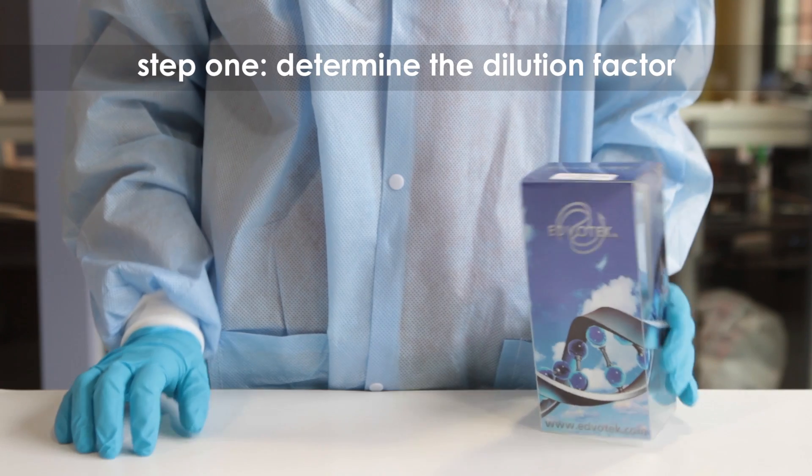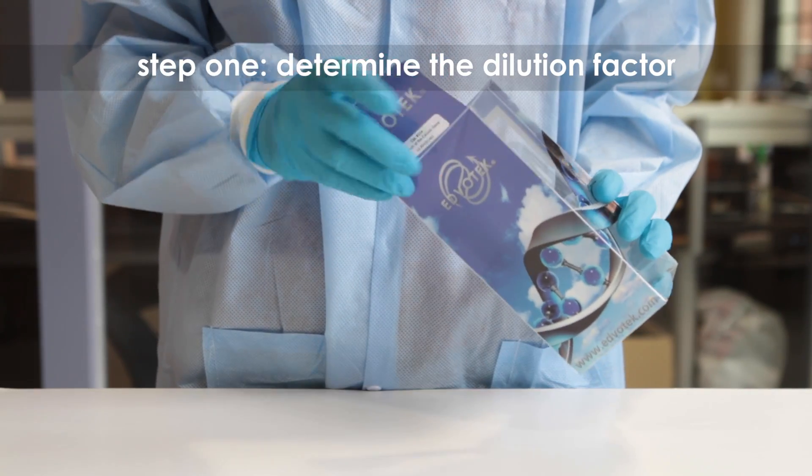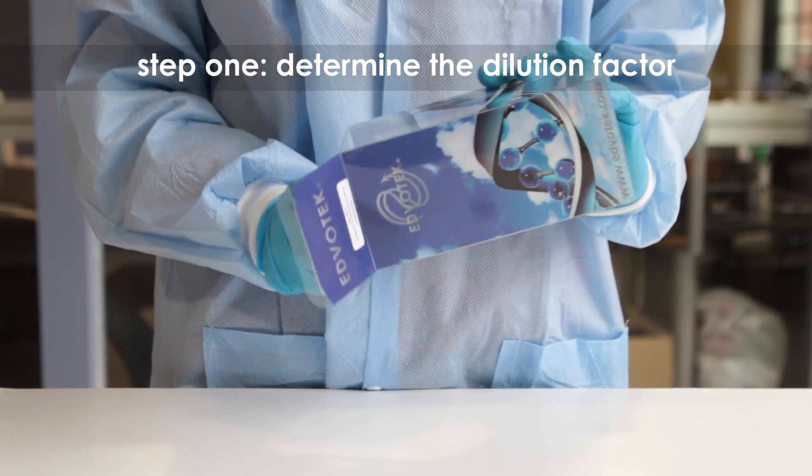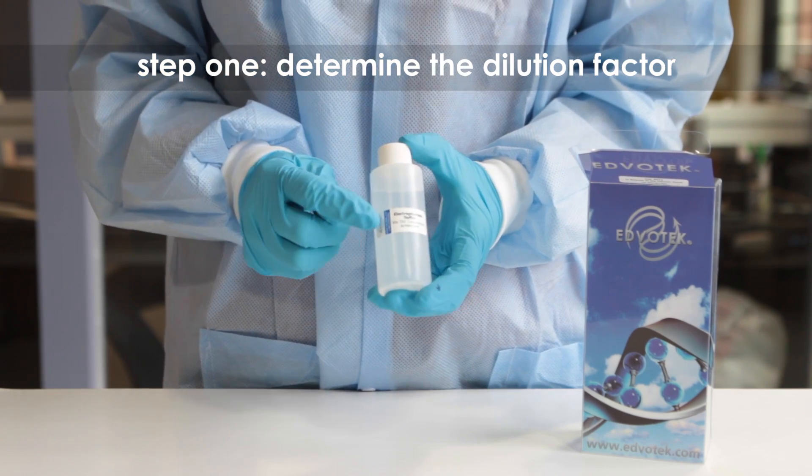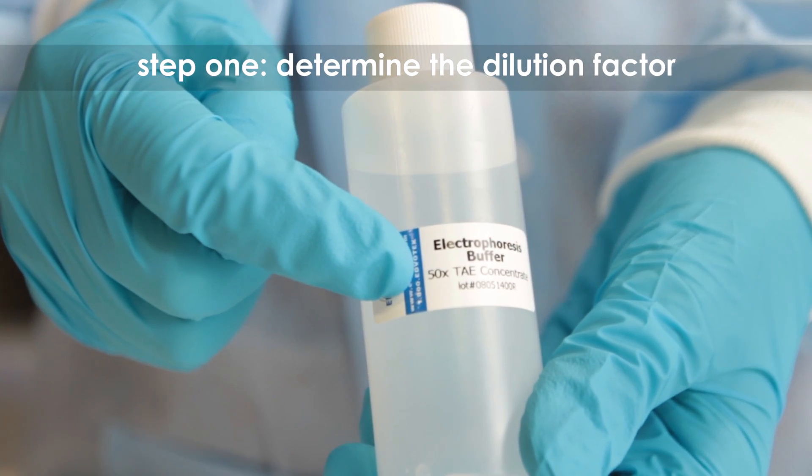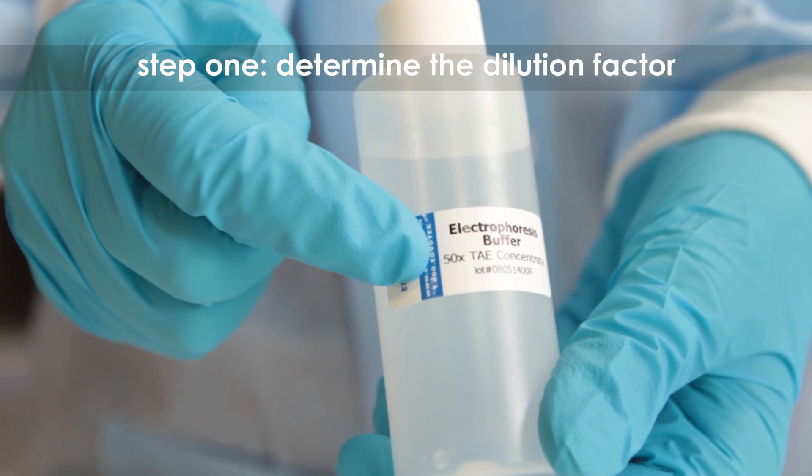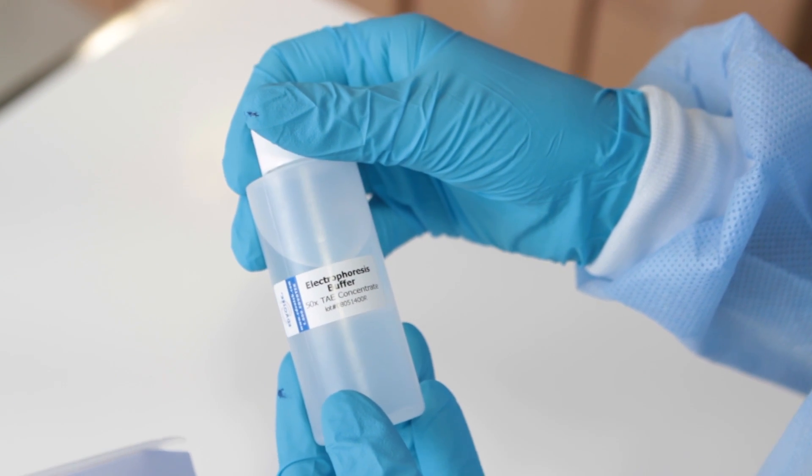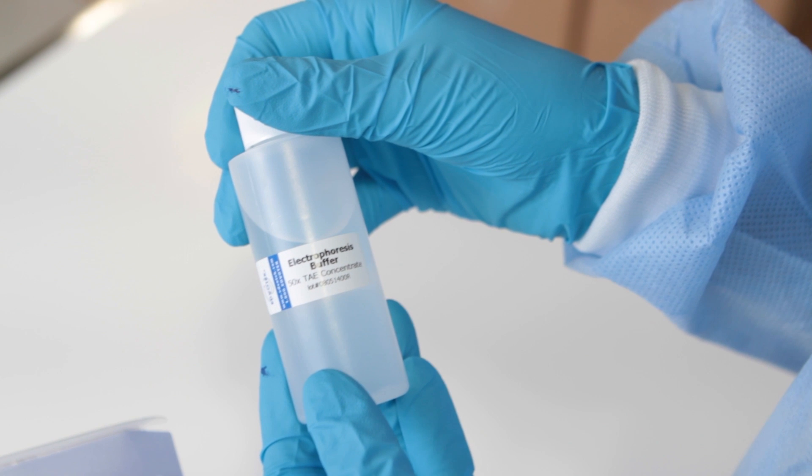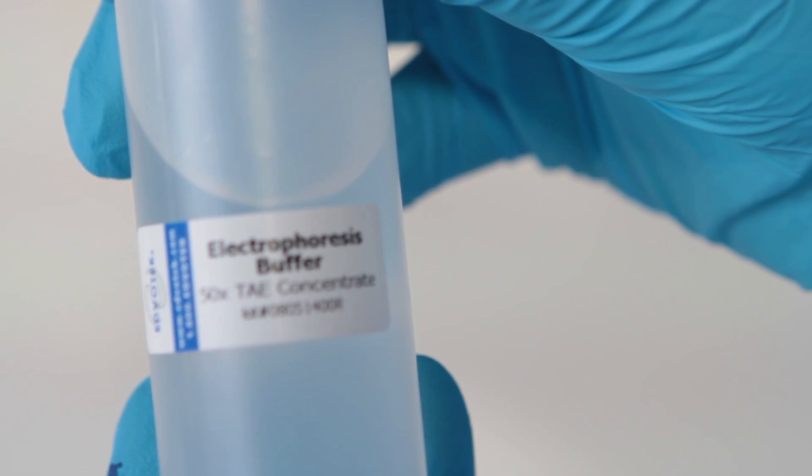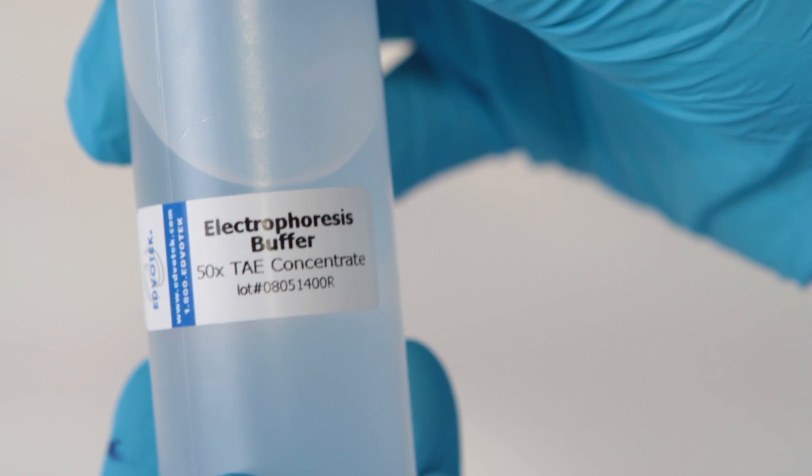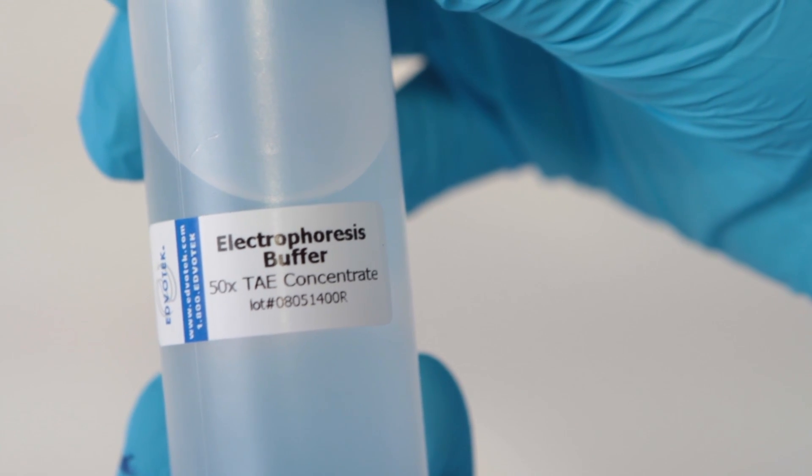Step 1. Determine the dilution factor. Let's say you need to prepare 1 liter of diluted or 1x TAE buffer for your electrophoresis experiments. However, your Edvotech kit contains TAE buffer that is 50x, which is 50 times more concentrated than you need. To get the working concentration of 1x, you will dilute the initial stock 1 to 50.